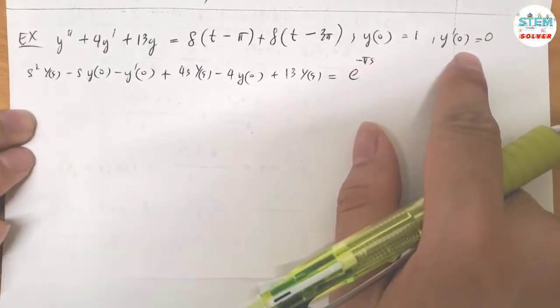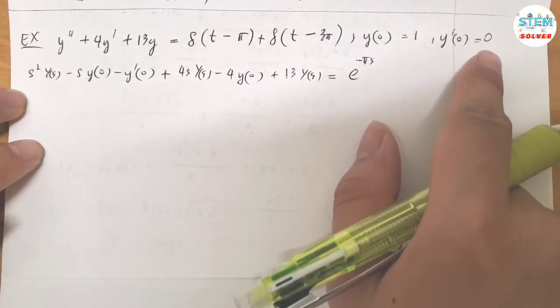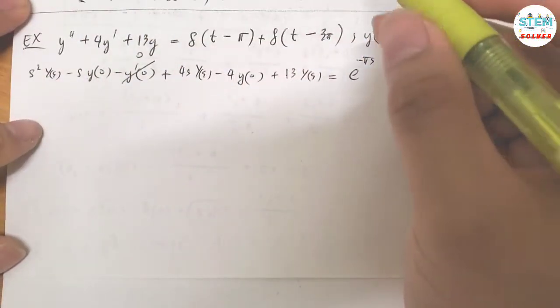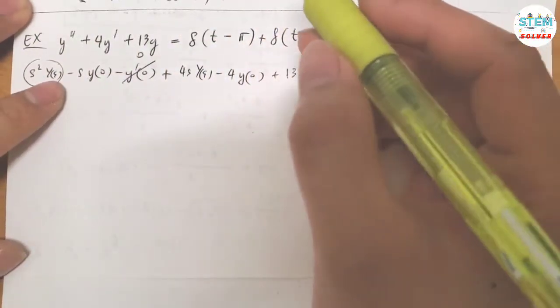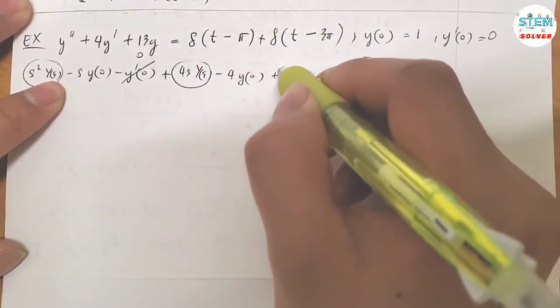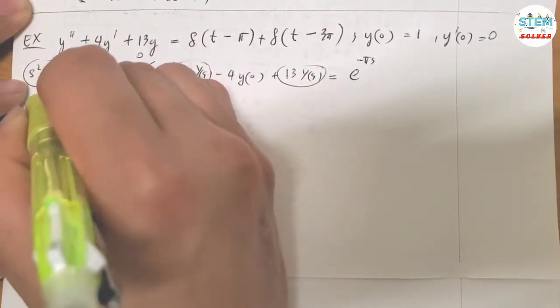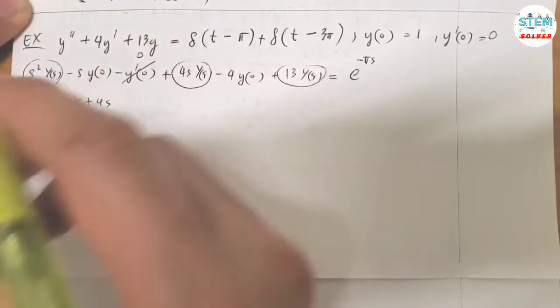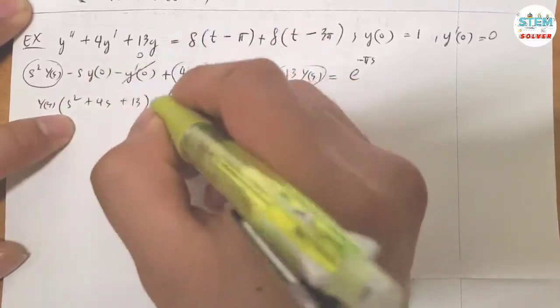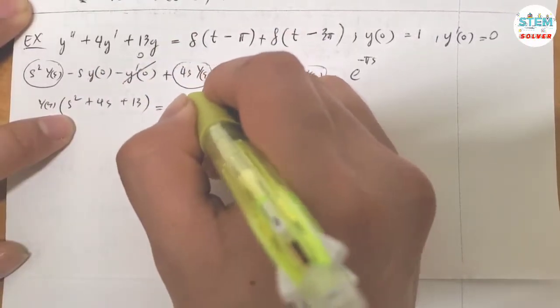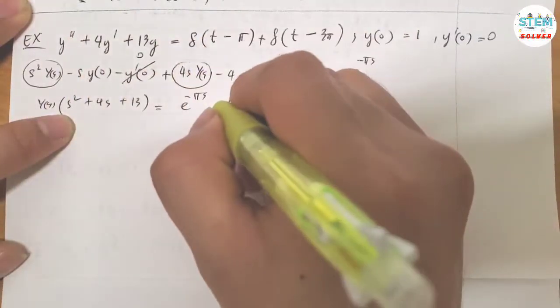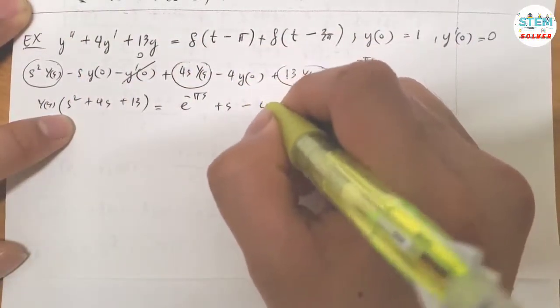Looking at the conditions, I have Y prime of 0 equals 0. So take a look at the capital Y of S's and factor out capital Y of S. I have S squared plus 4S plus 13 equals e to the negative pi S. This one Y of 0 equals 1, so plus S minus 4.